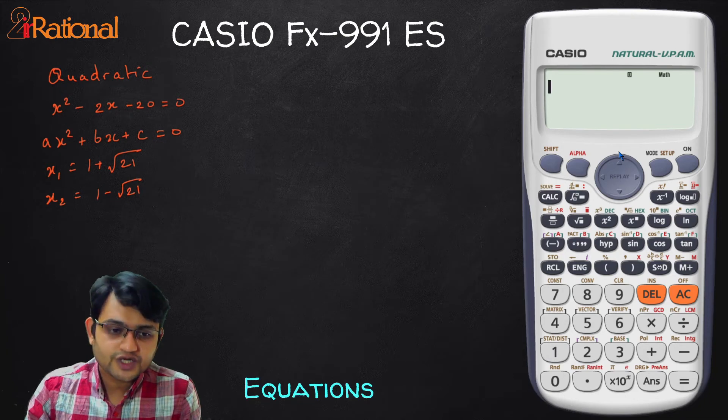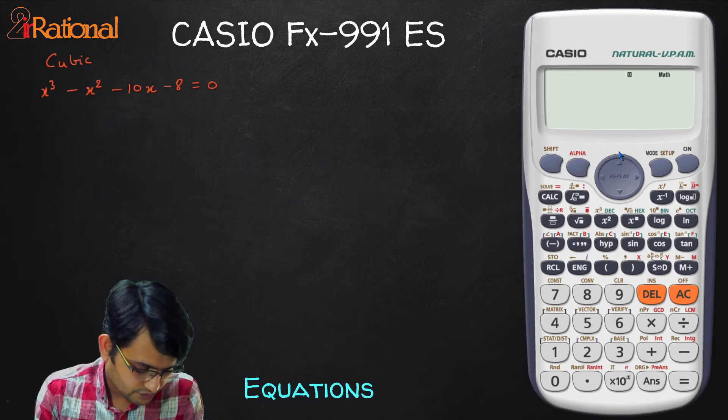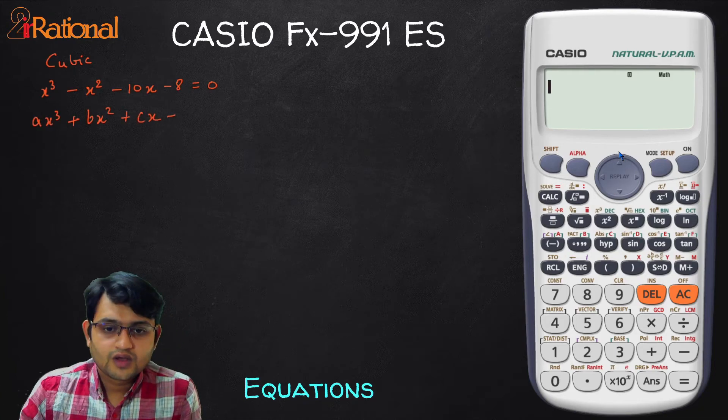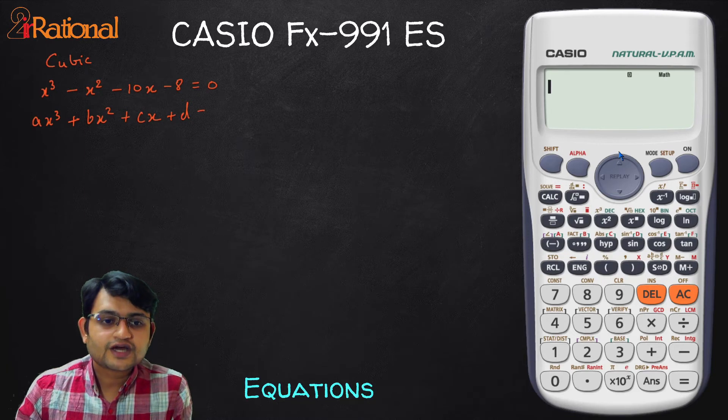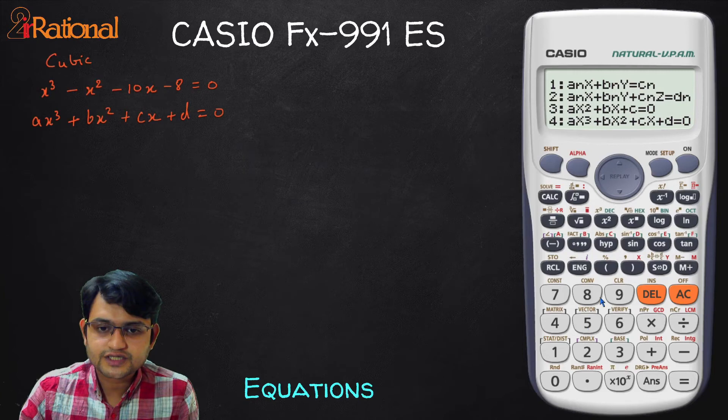If you take cubic equation into account a general cubic equation would be. So we can see the corresponding values. Now in here we will go to mode, equation and you can see 4 is our cubic equation.